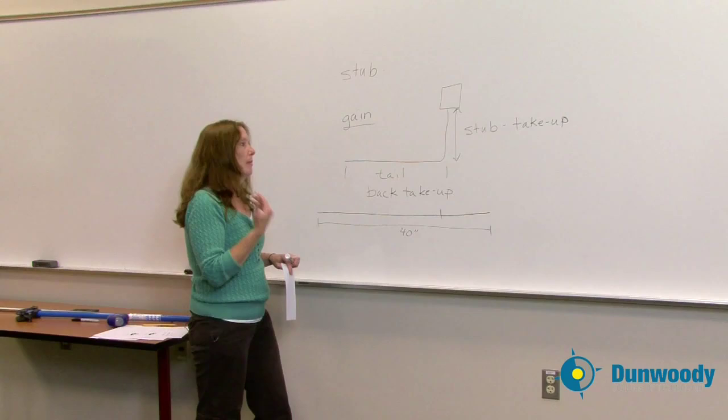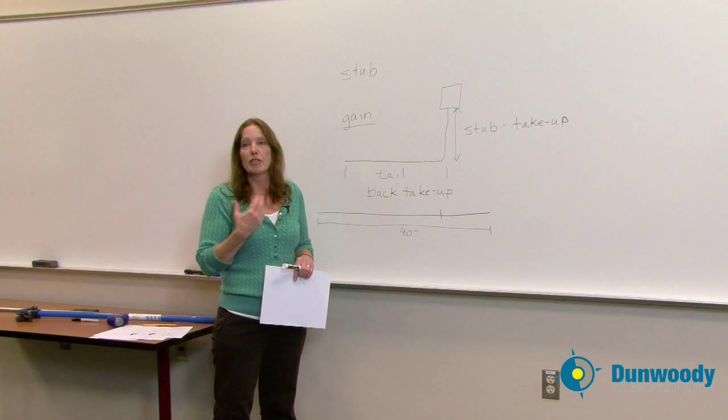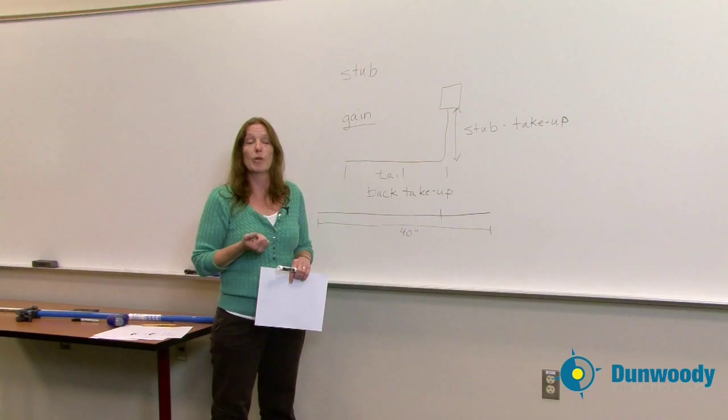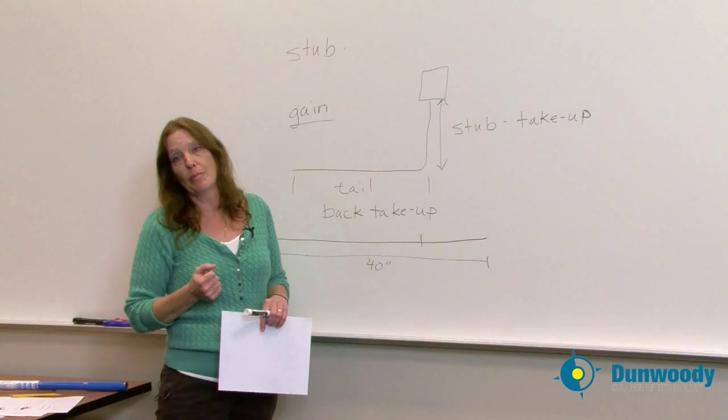Now, when I bend conduit, when I'm going for a 90 degree bend, with my stub take up, I have to consider first of all the size of the conduit. So with the size of the conduit, I have to think about if I'm using a half inch EMT, if I'm using a three quarter inch EMT or a one inch EMT. I have specific numbers for a stub take up, depending on the actual size of the conduit that I'm bending.